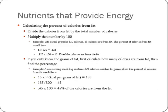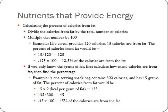If you want to look at the percentage of calories from fat, or from carbohydrates, or from protein — sometimes if you look at a cereal box it tells you the number of calories from fat — you can divide the calories from fat by the total number of calories and multiply by 100 to get the percentage.